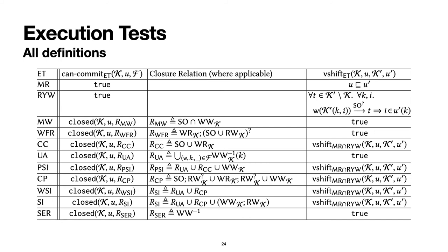Here is a table of all consistent models covered in the paper, including causal consistency (CC), parallel snapshot isolation (PSI), snapshot isolation (SI), and serializability (SER).